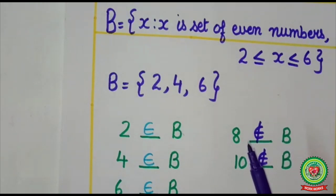On the other hand, if I will take 8, it is also an even number but it is not present in set B. So here I will write doesn't belong to set B. 10 doesn't belong to set B. Now I hope you understood how to use belongs to and doesn't belong to symbol.